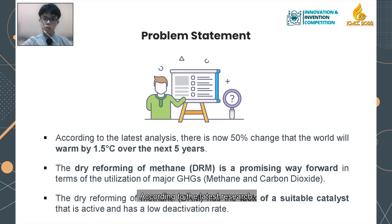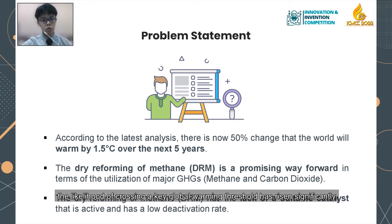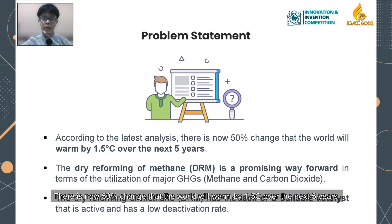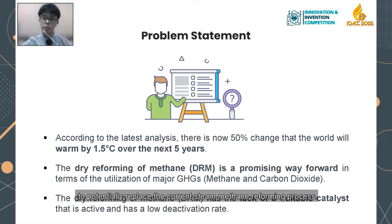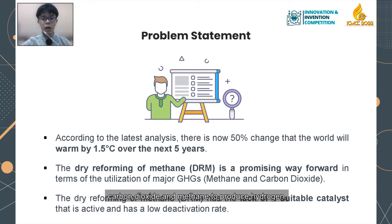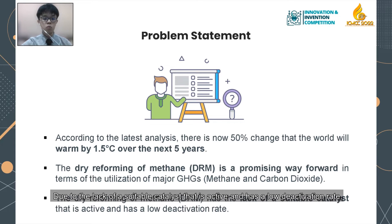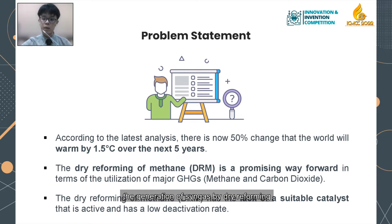According to the latest research, the likelihood of crossing a key global warming threshold has risen significantly. There is now a 50% chance the world will warm by 1.5 degrees Celsius over the next five years. A novel strategy of dry reforming of methane is found to potentially replace the current steam methane reforming process. This method utilizes two greenhouse gases — carbon dioxide and methane — to produce hydrogen. However, due to the lack of a suitable catalyst that is active and has low deactivation rates, the generation of syngas by dry reforming has not been commercialized at an industrial scale.